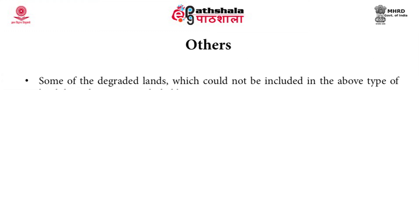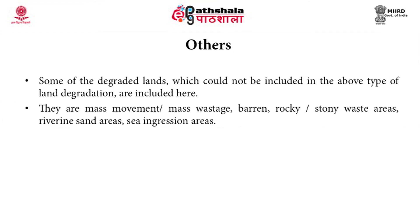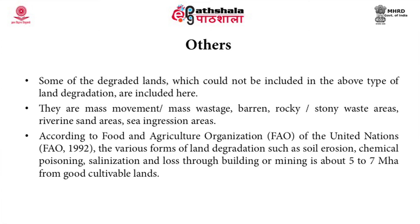Other processes not included in the previous categories include mass movement, mass wastage, barren rocky or stony waste areas, riverine sand areas, and sea ingestion areas. According to the Food and Agriculture Organization of the United Nations, various forms of land degradation such as soil erosion, chemical poisoning, salinization and loss through building or mining account for about 5 to 7 mega hectares lost from good cultivable lands.